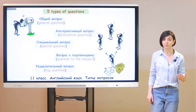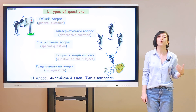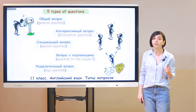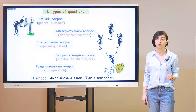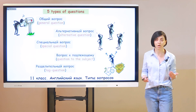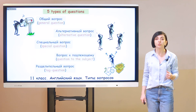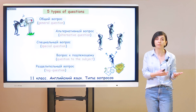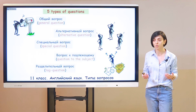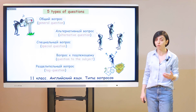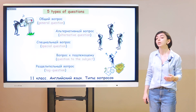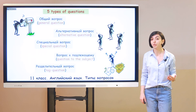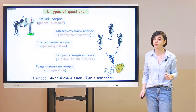In English we have got five types of questions. First, the general question — общий вопрос — because you can answer only yes or no. The second type is alternative question — альтернативный вопрос, предлагающий какой-то вариант. Type number three: special questions, or WH questions — специальные вопросы, содержащие специальное слово, начинающееся на WH: who, when, and so on. Fourth is the question to the subject — вопрос к подлежащему, наверное, самый простой тип. And the last but not the least — the tag question, разделительный вопрос с хвостиком, который вам рассказывали в средней школе.